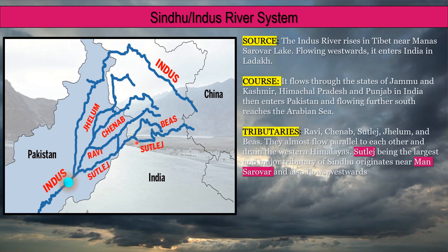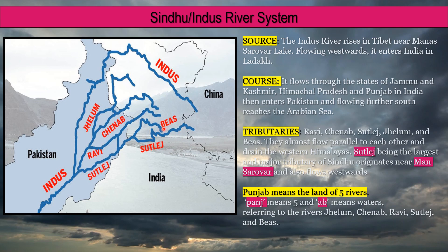The major tributaries of the Indus river are Ravi, Chenab, Sutlej, Jhelam and Beas. They almost flow parallel to each other and drain the western Himalayas. Sutlej, being the largest tributary, originates near Manasarovar and also flows westward. Thus Punjab means the land of five rivers — a compound of Panj meaning five and Ab meaning water — referring to the rivers Jhelam, Chenab, Ravi, Beas and Sutlej.